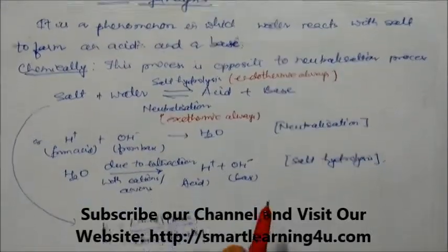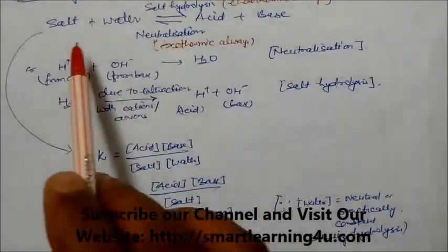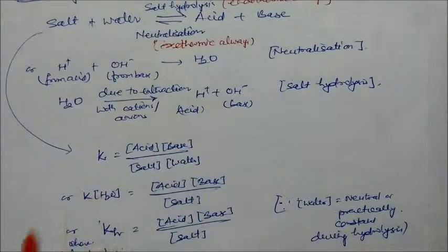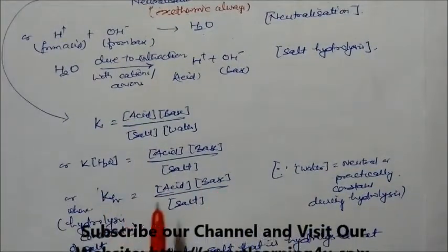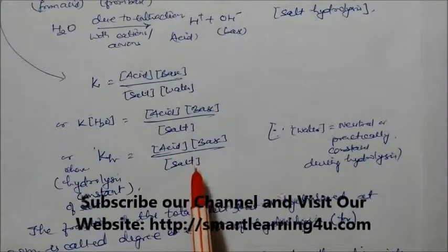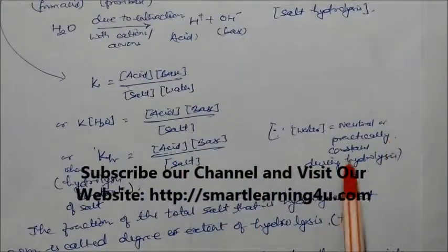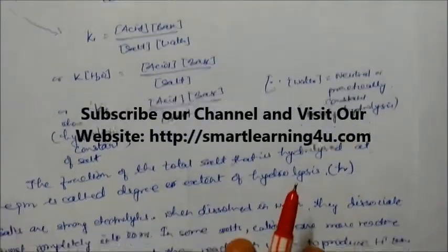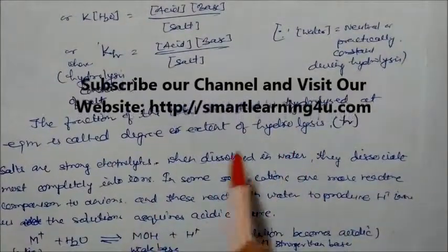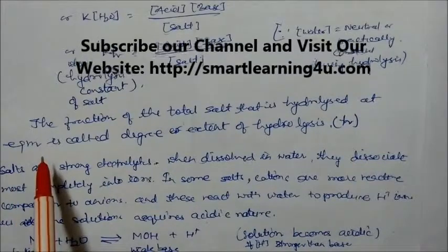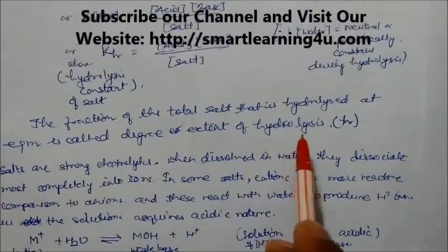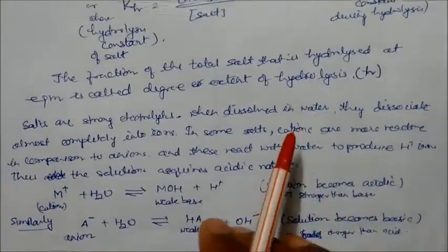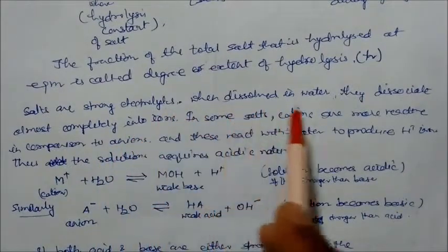The equilibrium constant K for salt reacting with water is expressed as K = [acid][base] / [salt][water]. Since water is practically constant, K·[water] = KH, the hydrolysis constant of the salt, where KH = [acid][base] / [salt]. The fraction of total salt that is hydrolyzed at equilibrium is called the degree or extent of hydrolysis, denoted by H. Salts are strong electrolytes and dissociate almost completely into ions when dissolved in water.